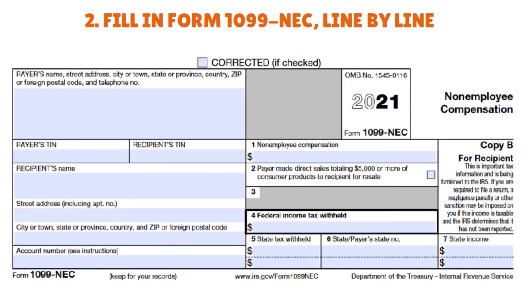Now let's talk about how to fill out the form. You have to include information about your business for each 1099-NEC you prepare, including your federal employer ID number, your business name, and your business address. You need to enter the recipient's taxpayer ID number — Social Security number, employer ID, or federal tax ID — along with all your business information in the boxes provided on the left side of the page.